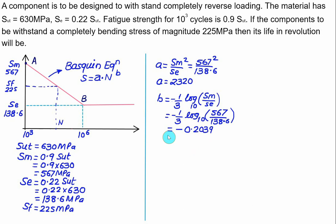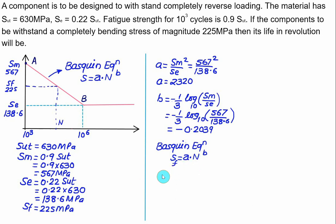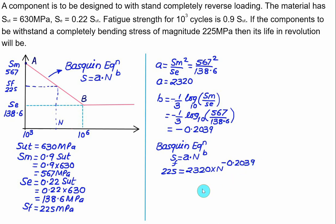Use the Basquin equation: SF = A × N^B. Substitute SF = 225, A = 2320, and B = −0.2039. Solving for N gives approximately 92,946 cycles. So the life of the component is 92,946 cycles before failure will occur.